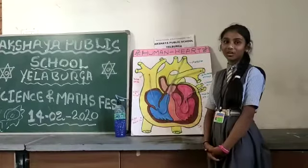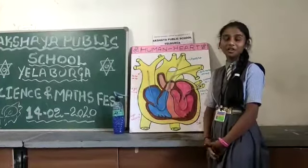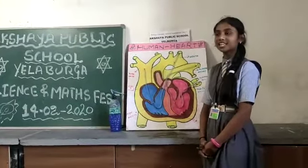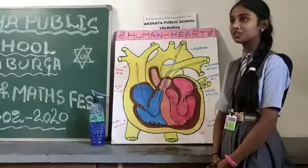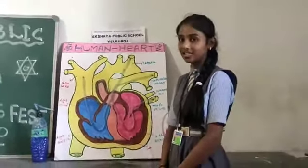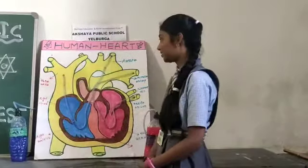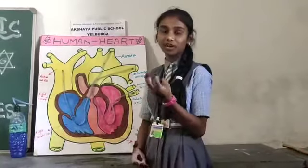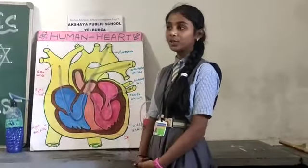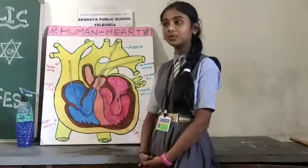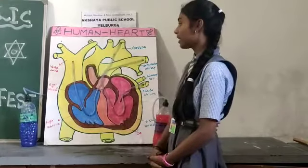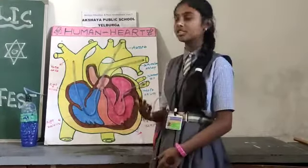The human heart is an organ. It pumps the blood through the body via the circulatory system, supplying oxygen and nutrients to the tissues and removing carbon dioxide and other gases. The human heart has roughly the size of a large fist and weighs between about 230 to 280 grams in women and 280 to 340 grams in men. The human heart has 4 chambers.